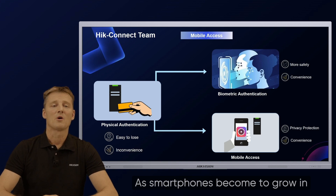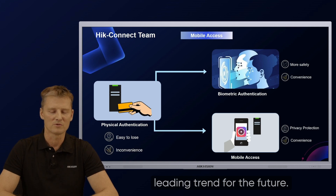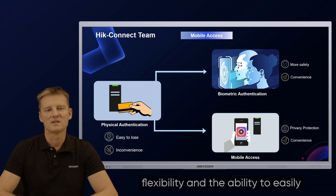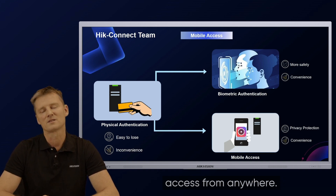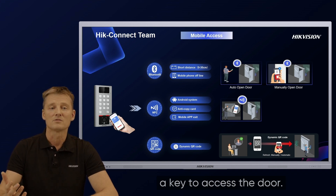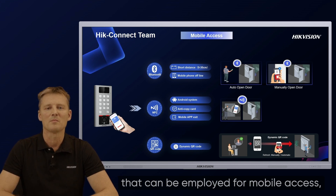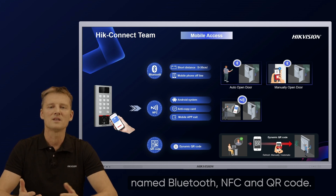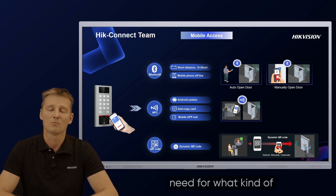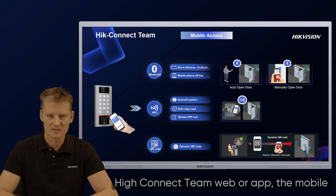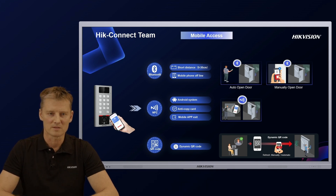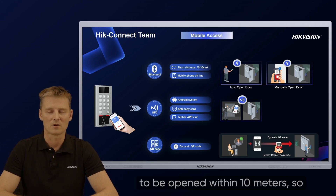As smartphones grow in popularity, using them to manage access points is becoming a leading trend. Mobile access not only offers increased convenience but also provides enhanced security, flexibility and the ability to easily monitor and control access from anywhere. Hikvision Mobile Access allows you to use your own smartphone as a key to access the door. There are three communication standards for mobile access: Bluetooth, NFC and QR code. Through Bluetooth, after configuration on the HiConnect Team web or app, mobile access control supports automatic door opening with a closing distance from 0 to 30 cm, and supports manual selection of the door to be opened within 10 meters — within the Bluetooth range.